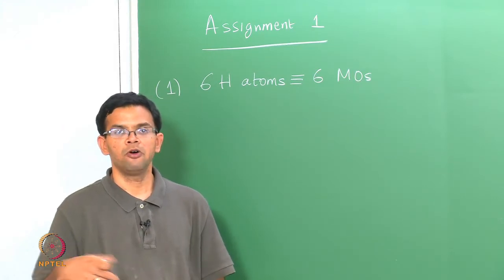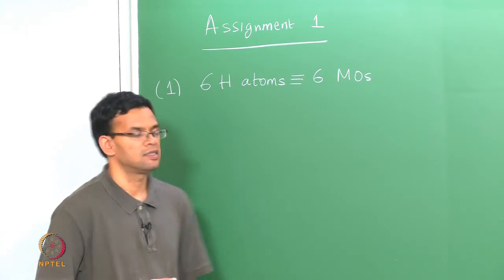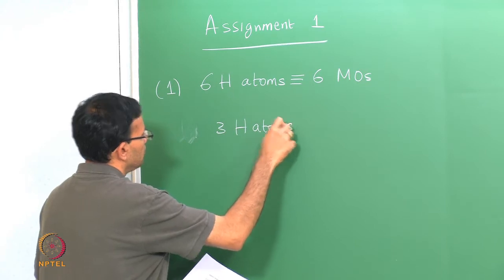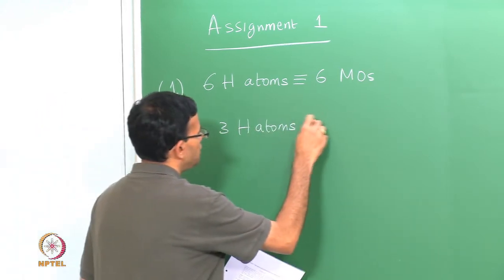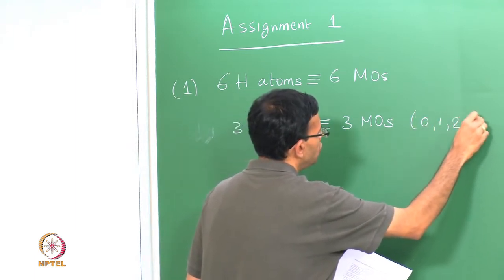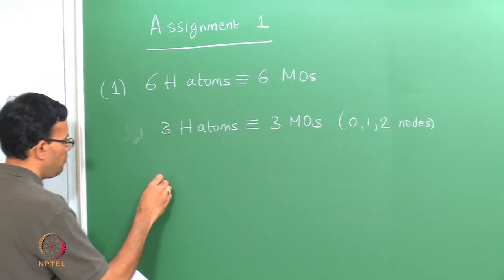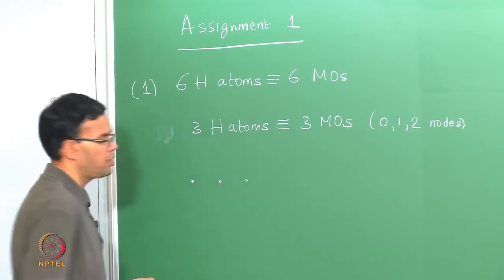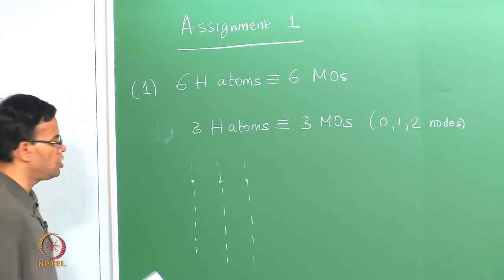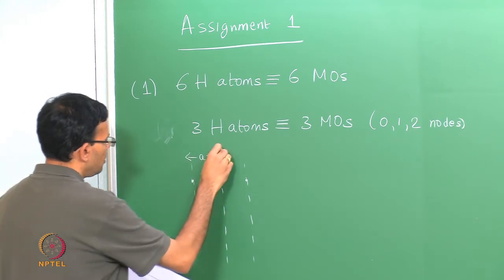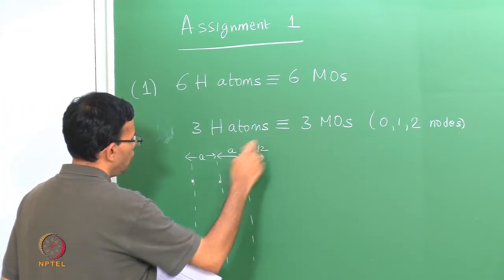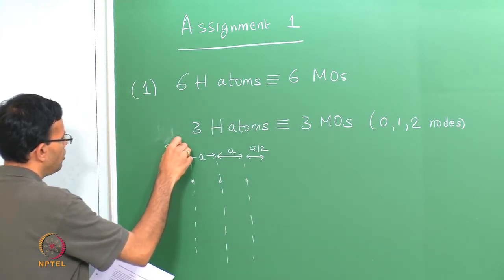We need to draw those 6 possible configurations. Let me go back and start with a simpler system we looked at in class - 3 hydrogen atoms. For 3 hydrogen atoms you have essentially 3 molecular orbitals. These dots represent the centers of the 3 hydrogen atoms, basically the nuclei. Let the distance between the hydrogen atoms be A, with a distance A over 2 on each side.